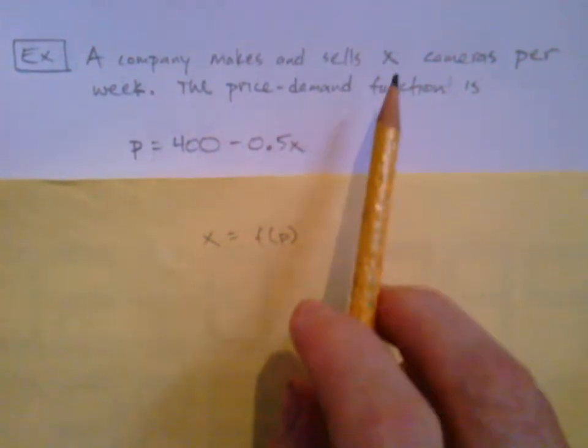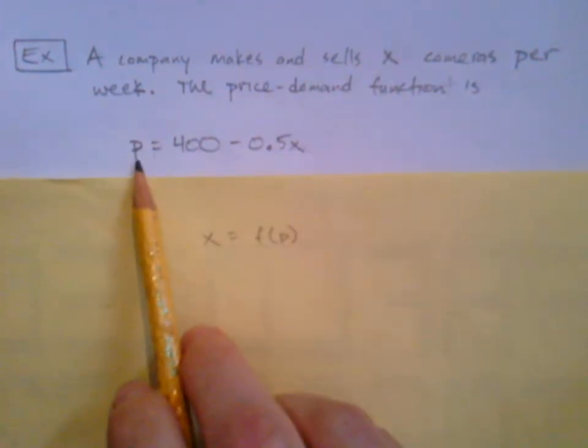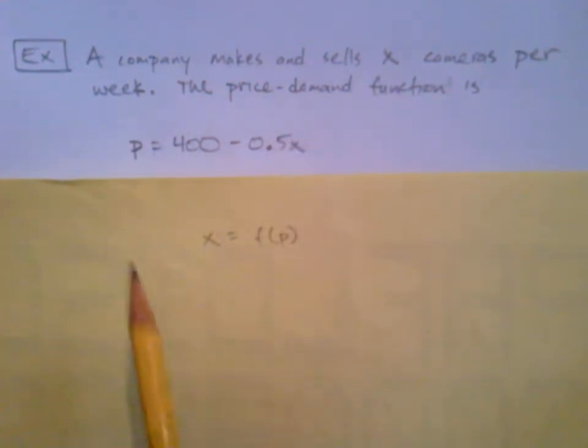So we're told how many cameras they make and sell, and that will determine our price. If we want to make 100 cameras, then we know what price to charge.